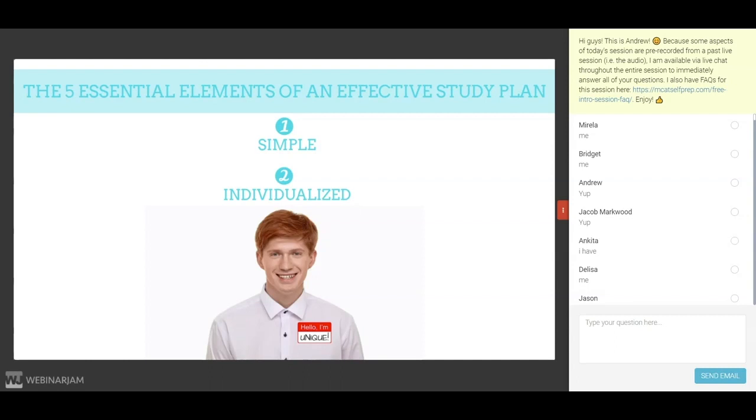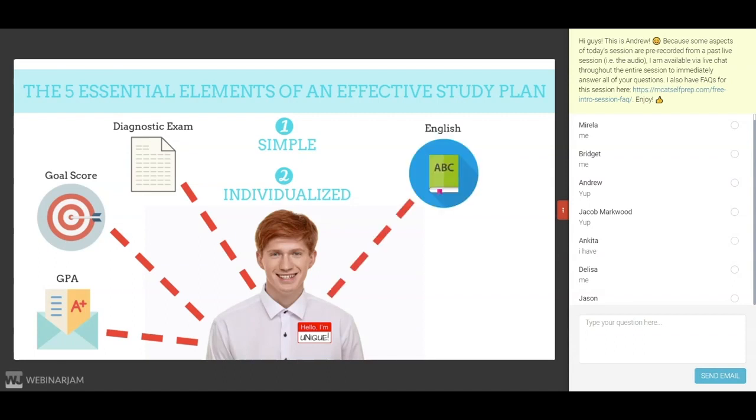There are several key factors that should influence how you should customize your study plan. The first and most important factor is your score on a diagnostic exam. If you are starting at a 482, you should certainly plan on spending more hours studying for the MCAT than someone who is starting at a 509. Additionally, you need to consider your goal MCAT score. If you are just a few points away from your goal, you will not need to invest as much as if you are 20 points away from your goal. Other factors to keep in mind include your GPA, whether English is your first language, your academic history, and your outside commitments.